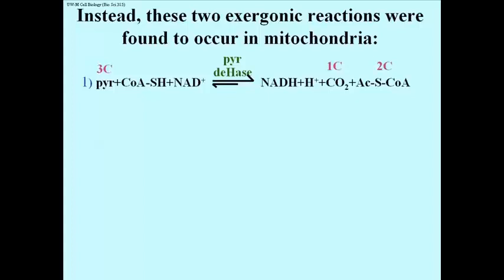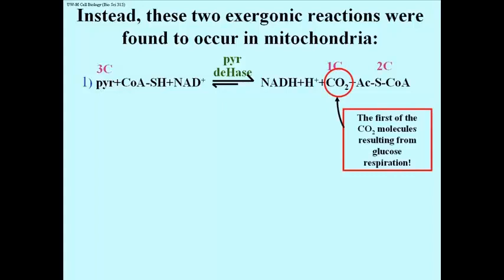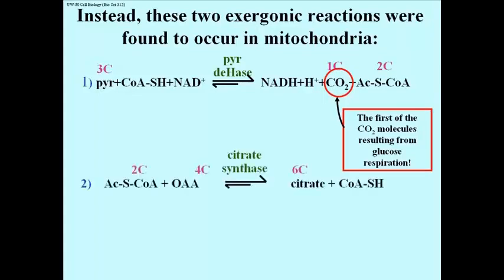The electron carrier that grabs the electrons away from pyruvate is NAD+, and it becomes NADH. In this process, the first of the carbon dioxide molecules resulting from glucose oxidation has come off. And since there were two pyruvates per glucose, two of the carbon dioxide molecules have been accounted for in the overall combustion of a molecule of glucose.